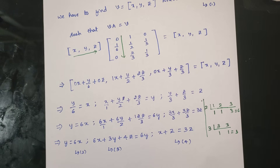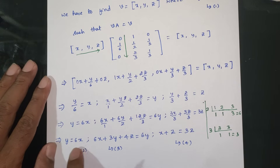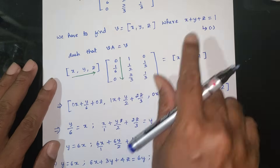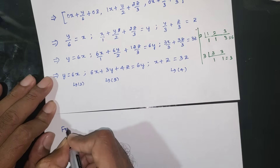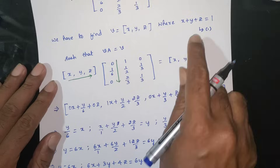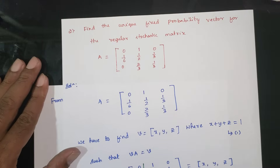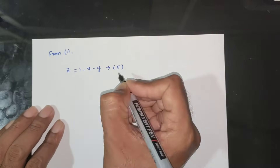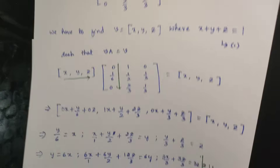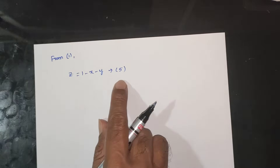We are working with a 3×3 matrix. From equation 1: y equals 6x. This procedure is followed using a 3×3 matrix. From equation 1, z equals 1 minus x minus y, which is equation 5.